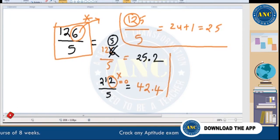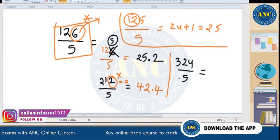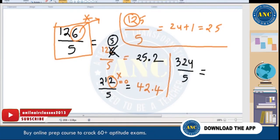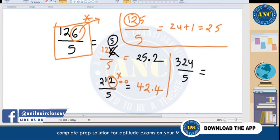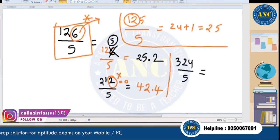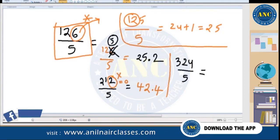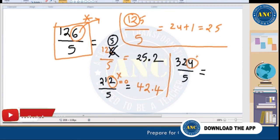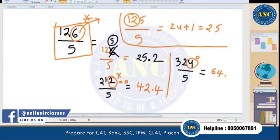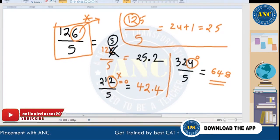Let's try 324 ÷ 5. Unit digit is neither 0 nor 5. Ignore the 4, treat as 320. 32 × 2 = 64. Now the remainder 4: point means it becomes 40, and 5 eights are 40, so the decimal is .8. Answer is 64.8.